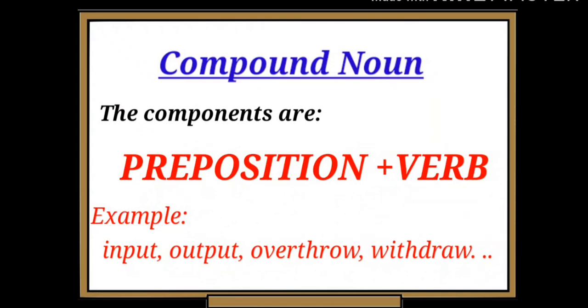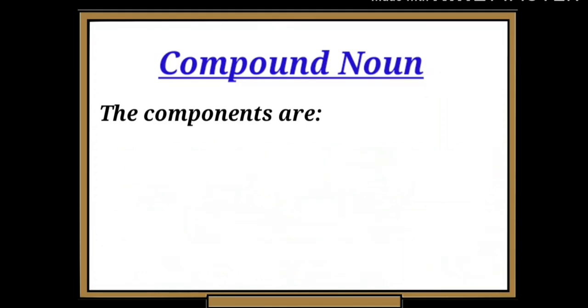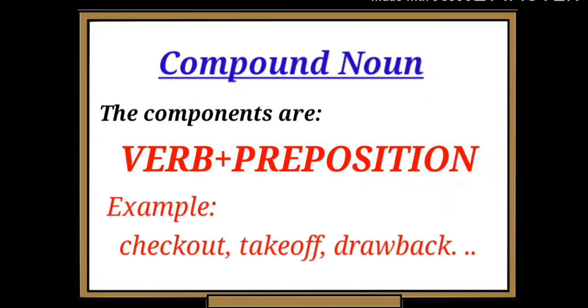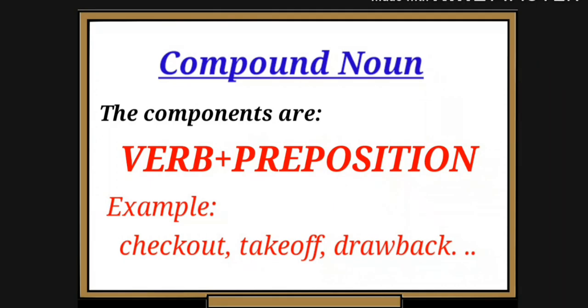Look at the examples - first word is preposition and the second one is verb. The preposition and verb together form a single word that is compound noun. The last and final components are verb plus preposition. For example: checkout, takeoff, drawback, etc. Next, let's look onto material nouns.